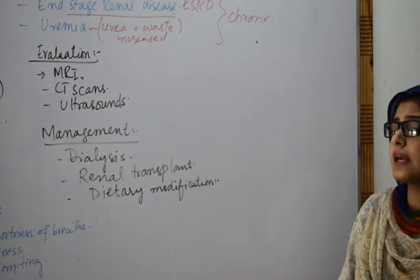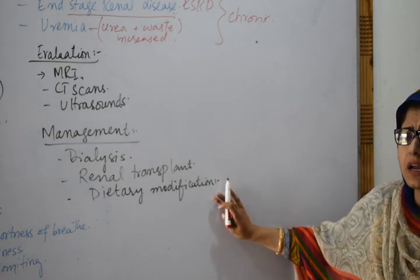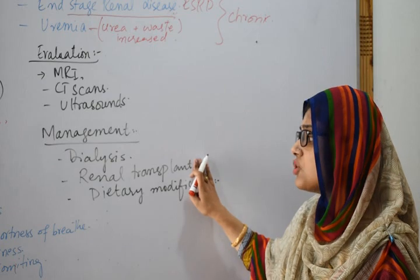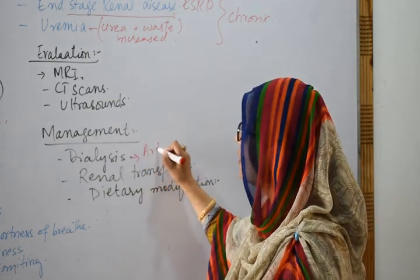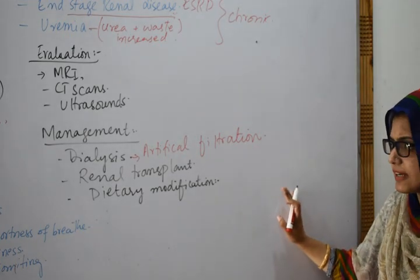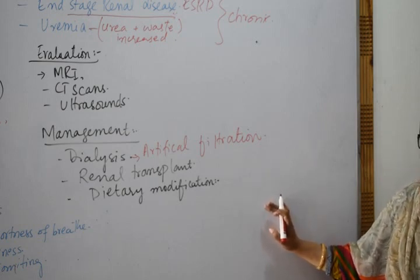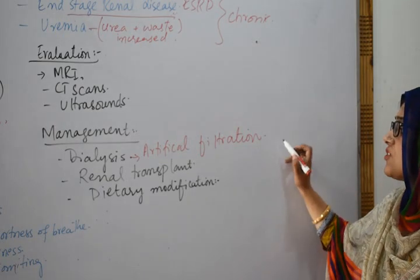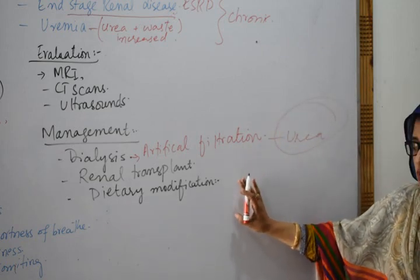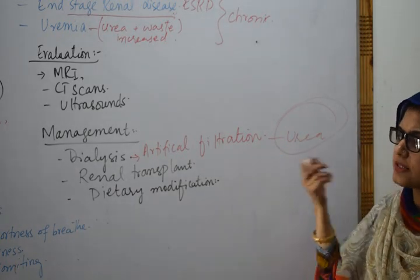For management, dietary modification can be done — reducing sodium and potassium intake in the diet. Then dialysis can be performed. In dialysis, blood is taken out and filtered, either through a hemodialysis machine or into the peritoneal cavity. There are two types of dialysis: peritoneal dialysis and hemodialysis, and both can be utilized in case of renal failure.